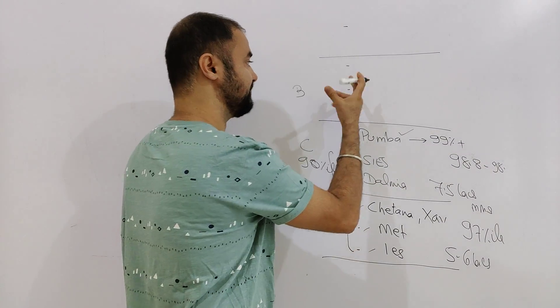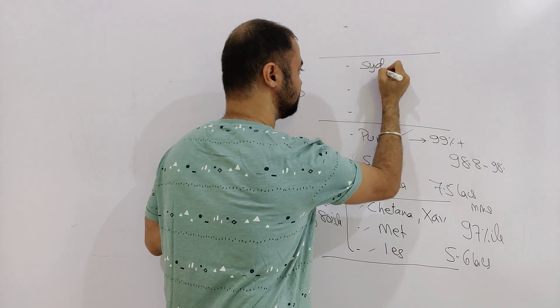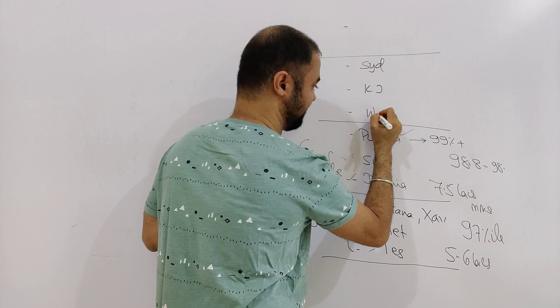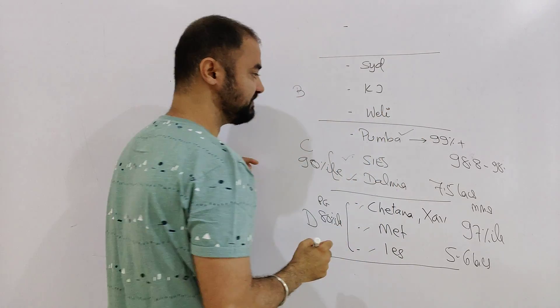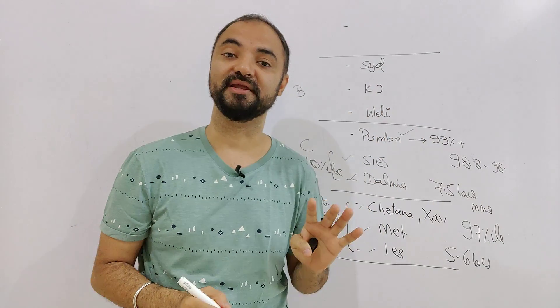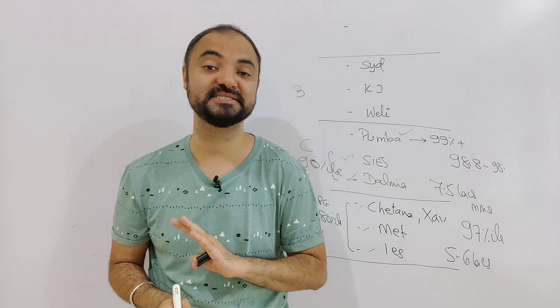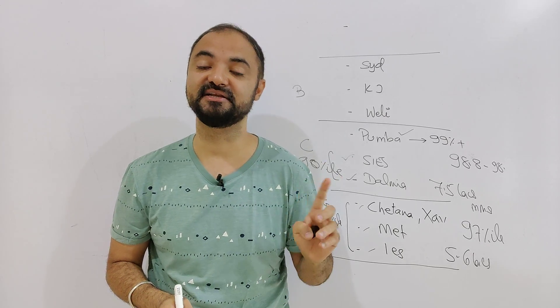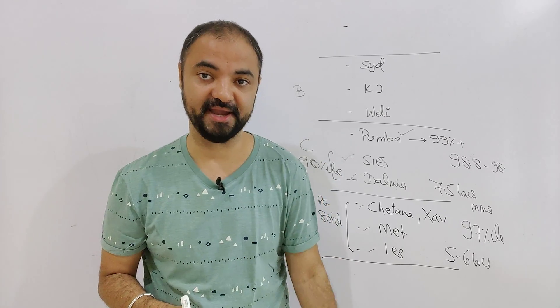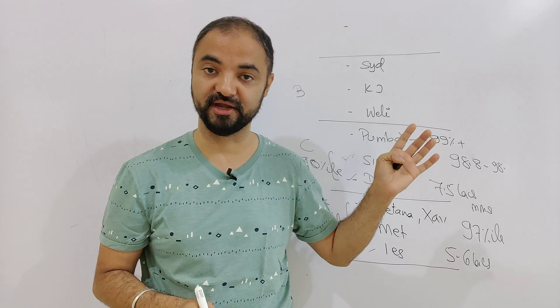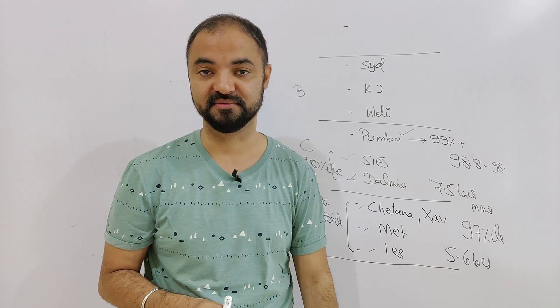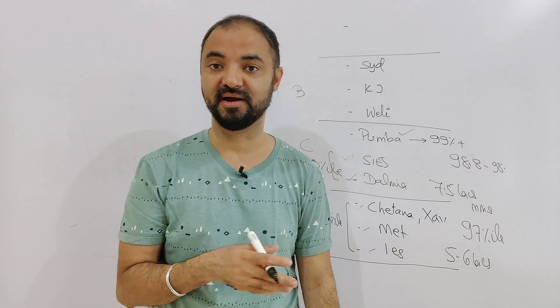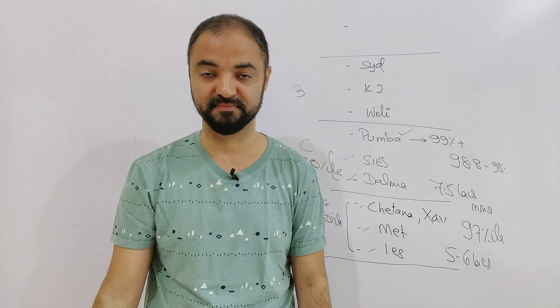Now, move to the Band B. We have Sydenham College, KJ Somaiya, Welingkar. And trust me, all these three colleges are equal in terms of their placements. Equal means equal. The only problem is, Sydenham intake is 180. And KJ Somaiya intake is 480. Welingkar intake is 600. Because the intake is high, Somaiya Welingkar rank will remain below them, below Sydenham.